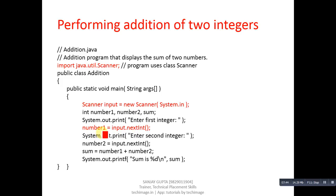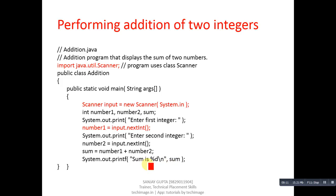Similarly, System.out.print displays 'Enter second integer', then input.nextInt() reads another number into number2. Then sum = number1 + number2, which is straightforward. We can also use System.out.printf, which is similar to the printf in C language — the format is the same. For example, printf("Sum is %d\n", sum) will print the sum. So print, println, and printf are all available to print output to the console.